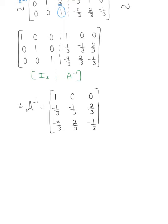There's nothing wrong with that answer, but if you don't like the fractions, feel free to factor out a scalar multiple of 1/3, which leaves us with the matrix 3, 0, 0; −1, −1, 2; −4, 2, −1, all multiplied by 1/3.